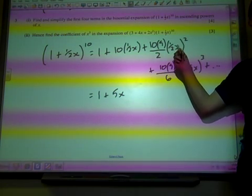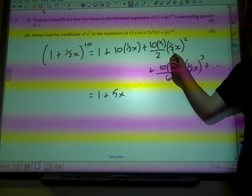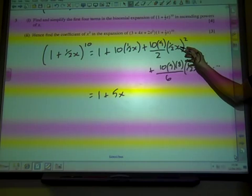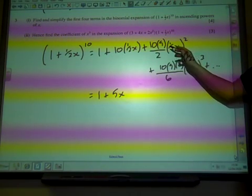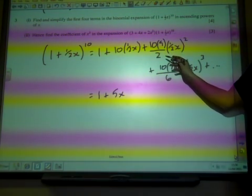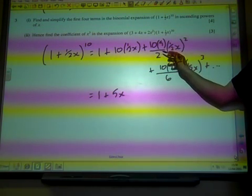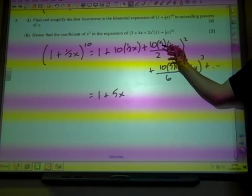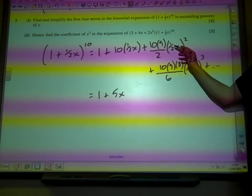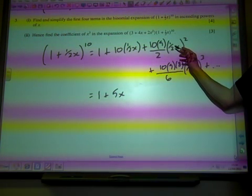Because you're squaring everything inside the bracket, so we've got a quarter times x squared, times ten times nine over two, that's going to be ten, that's going to be ninety over two, so forty-five times a quarter of x squared.